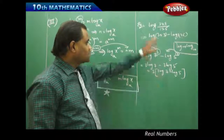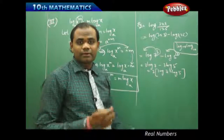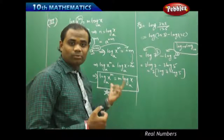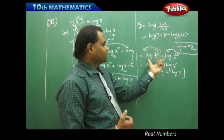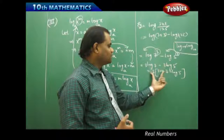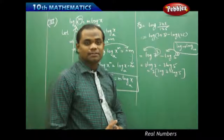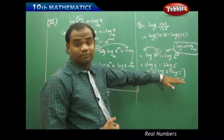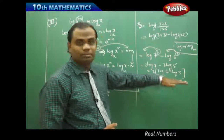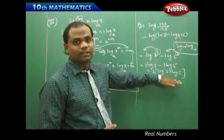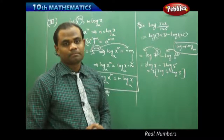So I simplify them using the different logarithmic properties, simplifying further to get the answer. This cannot be simplified further, so this is assumed to be the final answer for the given problem.